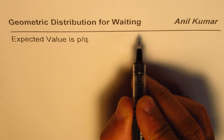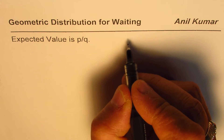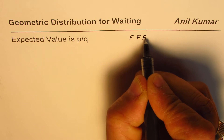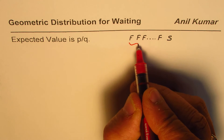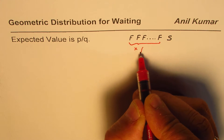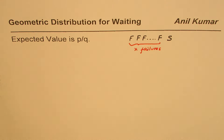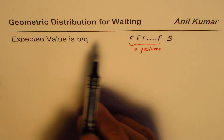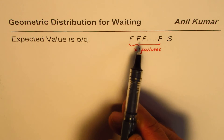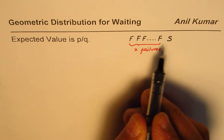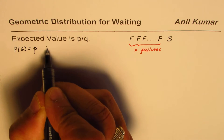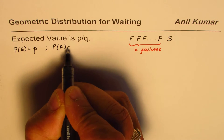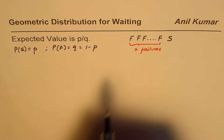When I say geometric distribution for waiting, it means that if we get success after X failures — so we have failure, failure, failure X times, followed by a success. That is the distribution we are looking at. It is geometric in nature. Here X is the number of failures, P is the probability of success, and Q equals 1 minus P is the probability of failure.